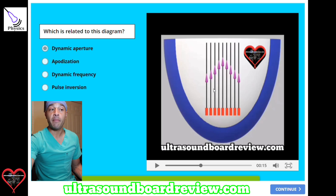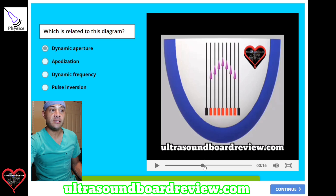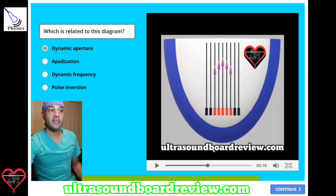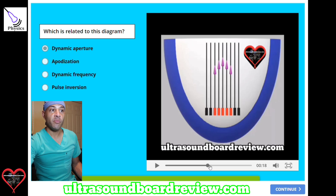When we turn on dynamic aperture, we are cutting off the voltage to this crystal and this crystal. As you can see, there's no voltage, so this crystal and this crystal is turned off. Then these crystals are turned off, followed by these crystals.